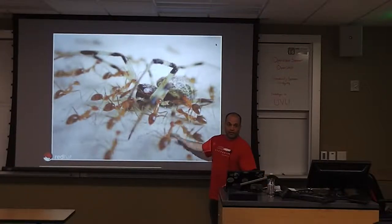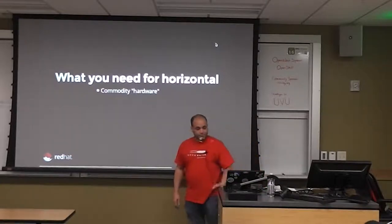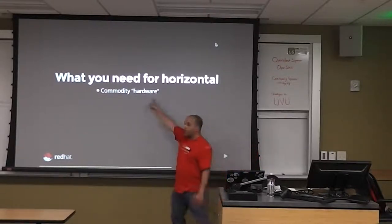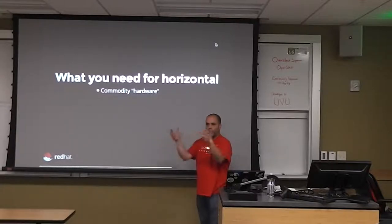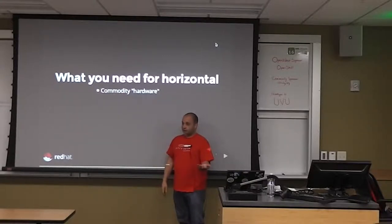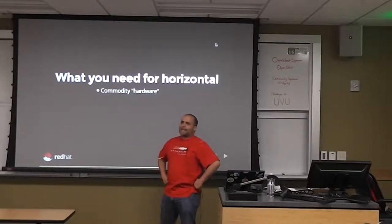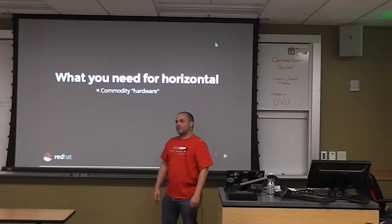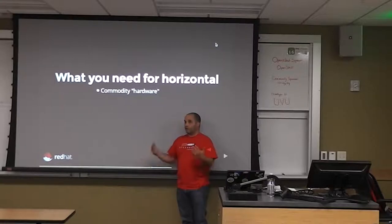For horizontal scaling you need commodity hardware — EC2 gives you virtual machines, but you need the ability to cheaply get another compute or memory unit. The other reason we used to vertically scale is because machines were expensive. I remember when my first terabyte RAID array was ten thousand dollars. Now you can go to Best Buy and get a two-terabyte external USB RAID array.